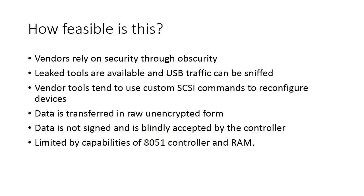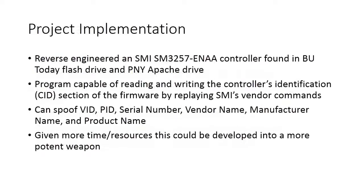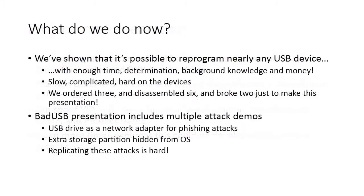USB device vendors rely on security through obscurity, but despite this, the documentation for several tools is readily available and traffic can be sniffed to work out custom protocols. Replay attacks on USB communication are trivial, and the firmware data is largely sent unencrypted for SMI and FISing controllers. To try out some of these tools, we reverse-engineered an SMI controller found in two of our USB sticks. We wrote a program capable of reading and writing the controller identification section of the firmware by replaying SMI vendor commands, allowing us to spoof much of the descriptive information about the drive — meaning no OS query can uniquely identify it, so a whitelist or blacklist is useless in preventing it from attacking you.